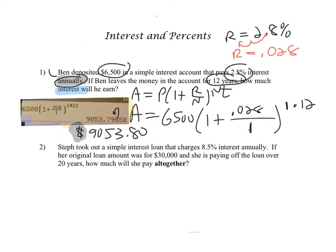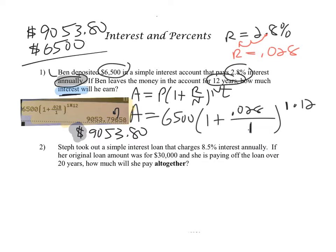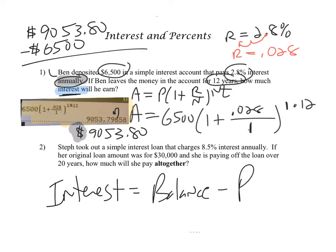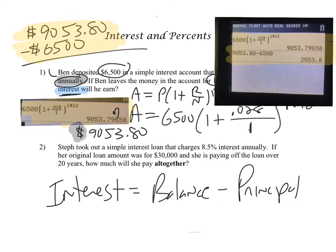But that's not what the question is asking. The question is asking how much in interest will he earn. Remember, the interest is the extra money that he earned. He deposited $6,500 in the bank and now has over $9,000 in the bank. The way you calculate the interest is you take the balance — how much money is in the bank now — minus the principal — how much money you put into the bank. So we're going to subtract these values: balance minus principal to get the interest.